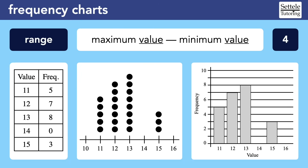We'll start with the range because it's probably the easiest to calculate. The range is defined as the maximum value minus the minimum value. For this dataset, the range is 4. On the frequency chart, the maximum value is 15 and the minimum is 11, so 15 minus 11 is 4. The frequency of those values doesn't matter — as long as there's one or more, we can use that value. On the dot plot, the smallest value with dots is 11 and the largest is 15. The histogram works the same way.